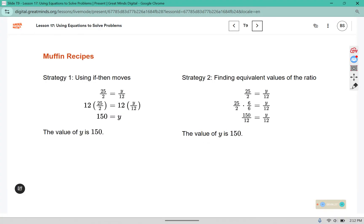So here's just a couple of different ways that they've solved it. You can see they've used some if-then moves. They said, well, 25 divided by 2, that's where that 12.5 comes from. And that's going to equal the y value divided by the x value in the other situation. Then to solve it for y, since it's being divided by 12, they multiplied both sides by 12. And they also found that y was equal to 150.